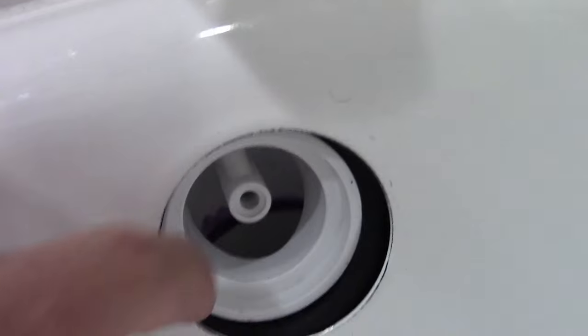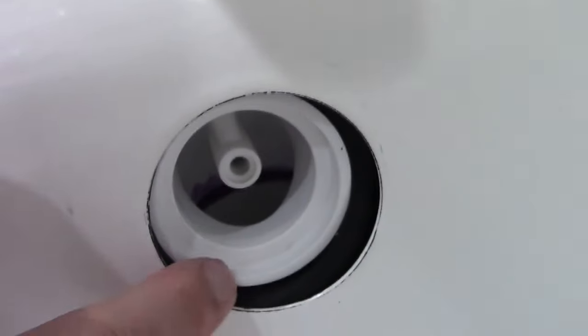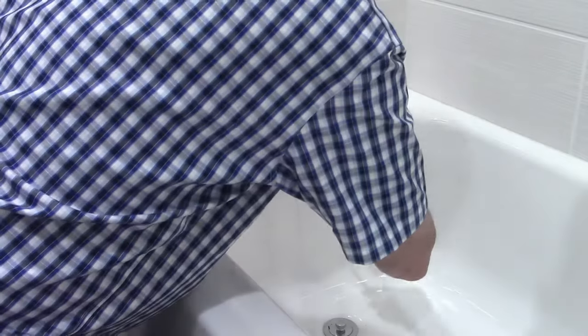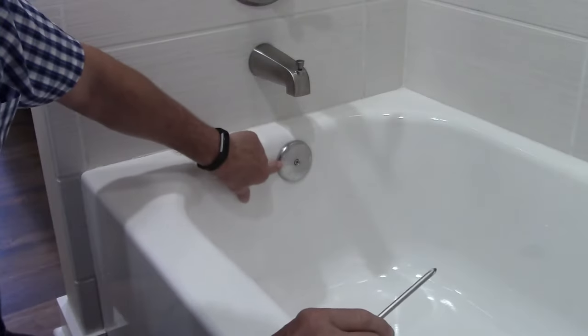Now what's going to happen is, once I insert the cover back on, it's going to pull the pipe and therefore compress the gasket next to the tub. And that is what is going to give you the hopefully watertight seal. So let's do that now.